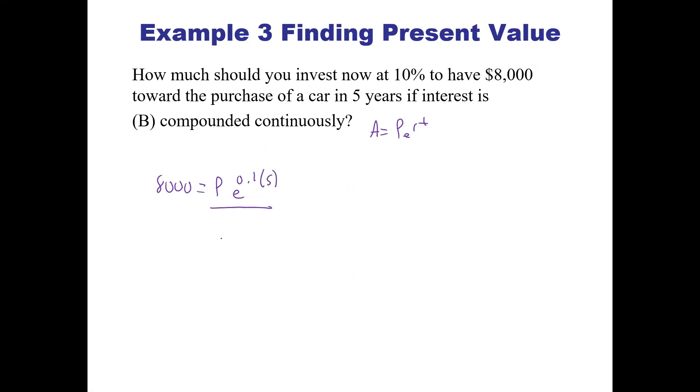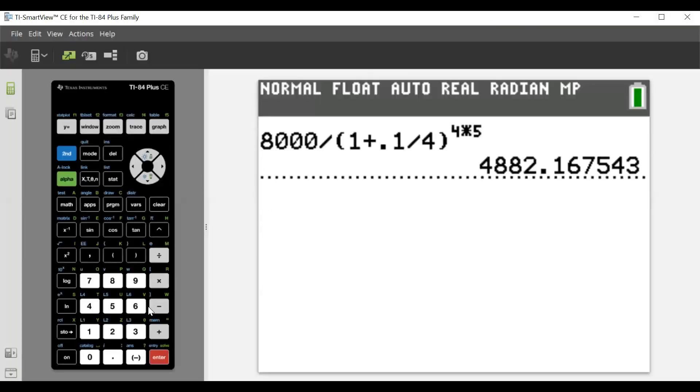We're going to divide by e to the 0.1 times 5 to isolate P. So P equals $8,000 divided by e to the 0.1 times 5.